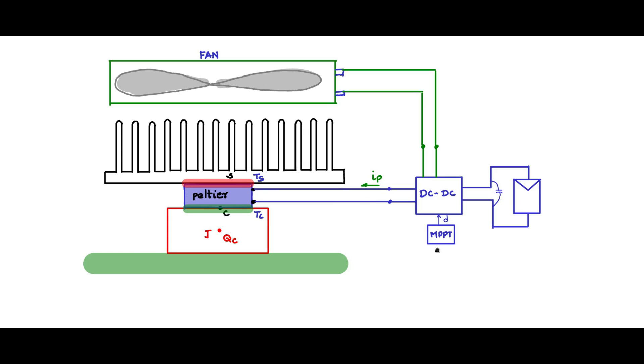So you need a whole set of electronics like this: PV panel, DC-DC converter, MPPT, fan controller, and so on, to enable the Peltier junction or the Peltier element to act as a heat pump.